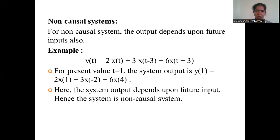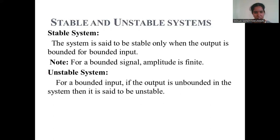A non-causal system is one where the output depends upon future inputs. For example, Y(t) = 2·X(t) + 3·X(t − 3) + 6·X(t + 3). Substituting t = 1 gives Y(1), X(1), X(−2), and X(4). Here X(−2) is a past value and X(4) is a future value, so the system is a non-causal system.